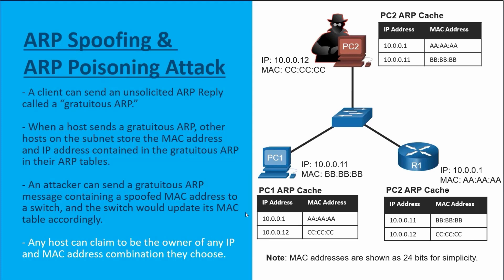The problem is when someone sends out a gratuitous ARP as a broadcast, other devices — which should be hosts as well as network switches — are going to store that MAC address and IP address combo in their ARP tables and MAC address tables. This is an issue because a threat actor can send a gratuitous ARP message with spoofed information, effectively allowing any host to claim to be the owner of any IP address and MAC address combo they want.